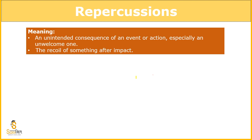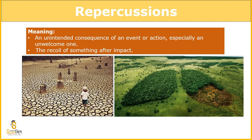Let us read this: an unintended consequence of an event or action, especially an unwelcome one. The recoil of something after impact — recoil means to remember something with fear, regret and guilt. As an impact, as an effect, as a consequence which we did not intend but came out. For example, the effects of deforestation — species went extinct, our ecology changed, people have been having breathing problems. These were the repercussions of deforestation, and we are suffering from that till now.